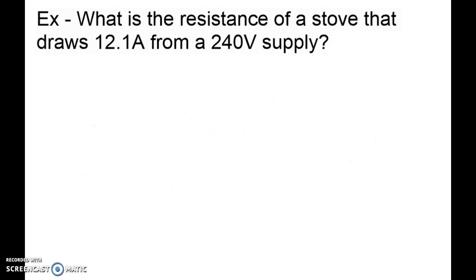So what is the resistance of a stovetop that draws 12.1 amps from a 240 volt supply? If you've ever seen the little coil things that are on top of your stove, they tend to get red when they heat up. Why are they heating up? Because they're losing energy. They're losing energy in the form of heat, and that's what we want. We want the elements on our stove to have a resistance.